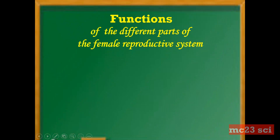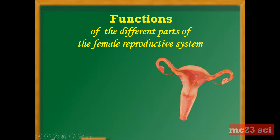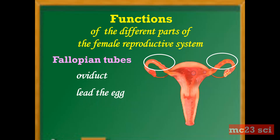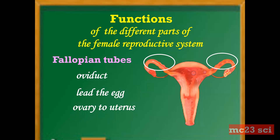For the function of the different parts of the female reproductive system, here are the fallopian tubes. It is also called the oviduct. It is a tube that leads the egg from the ovary to the uterus. This is also the place where the egg is fertilized by the sperm cell.